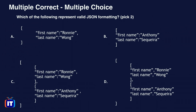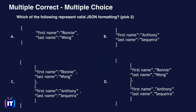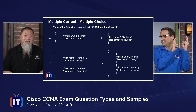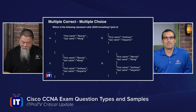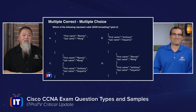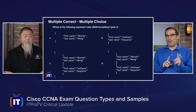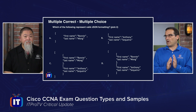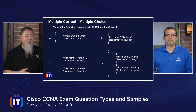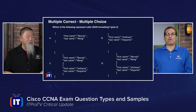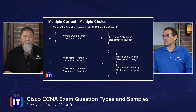Anthony also identifies square bracket usage in D, noting those aren't proper arrays in that context, so D is out. He selects A and C as valid JSON formatting. After a brief mix-up in how the answers were transferred, it's confirmed that A and C are indeed correct. The learning point: square brackets are used with arrays. Option A shows a standard key-value pair, and option C shows a true array. That's how to eliminate the incorrect square bracket usages in B and D.